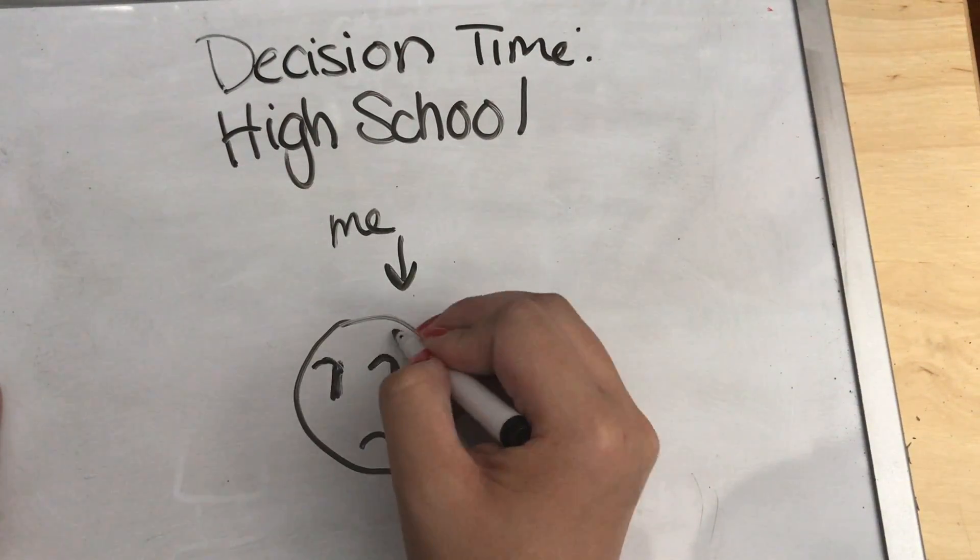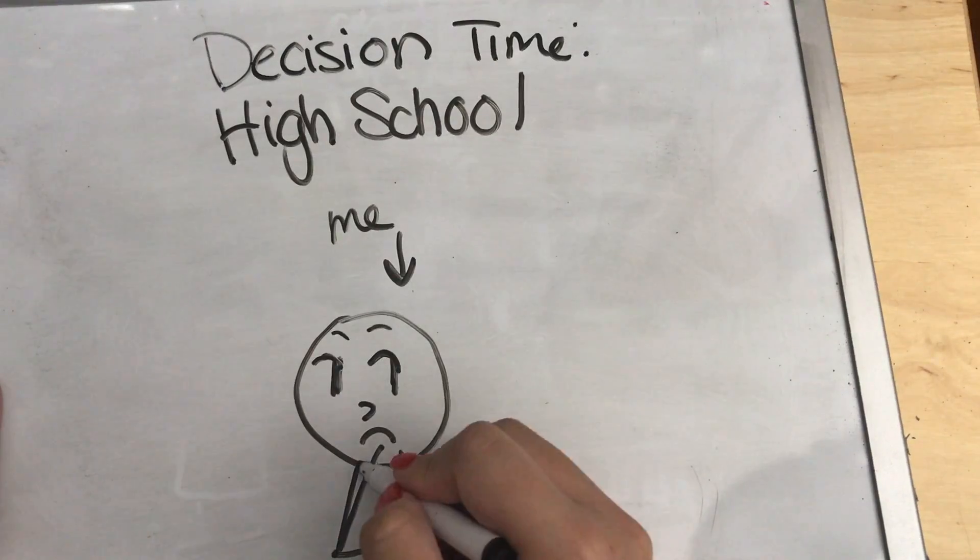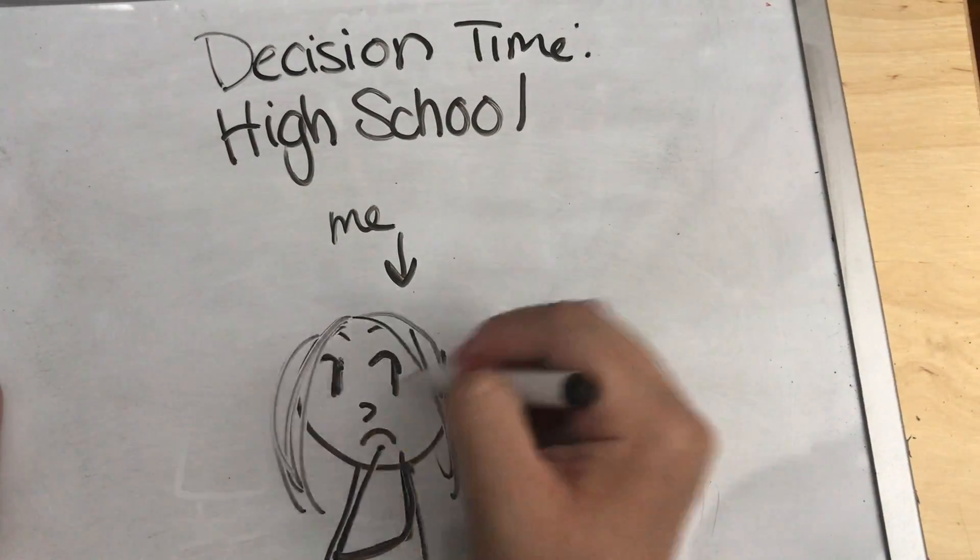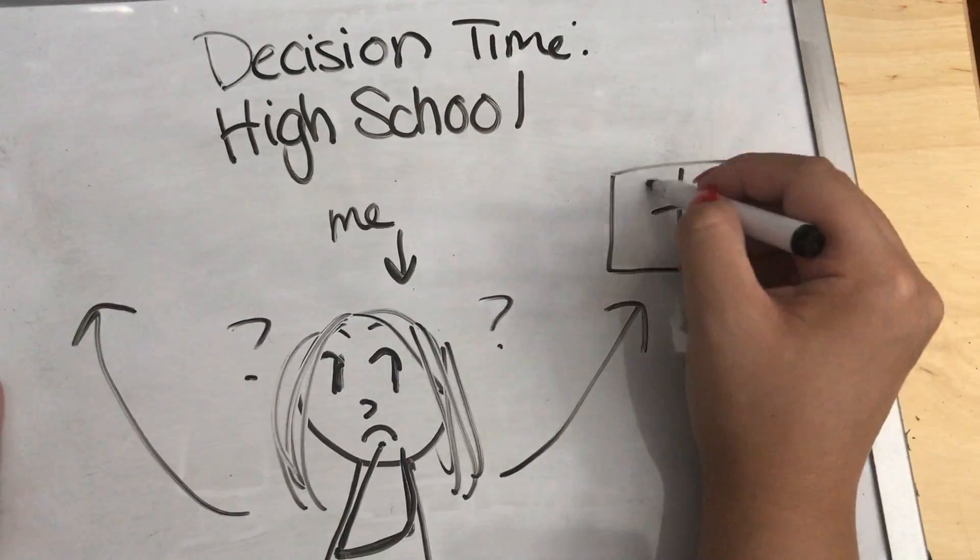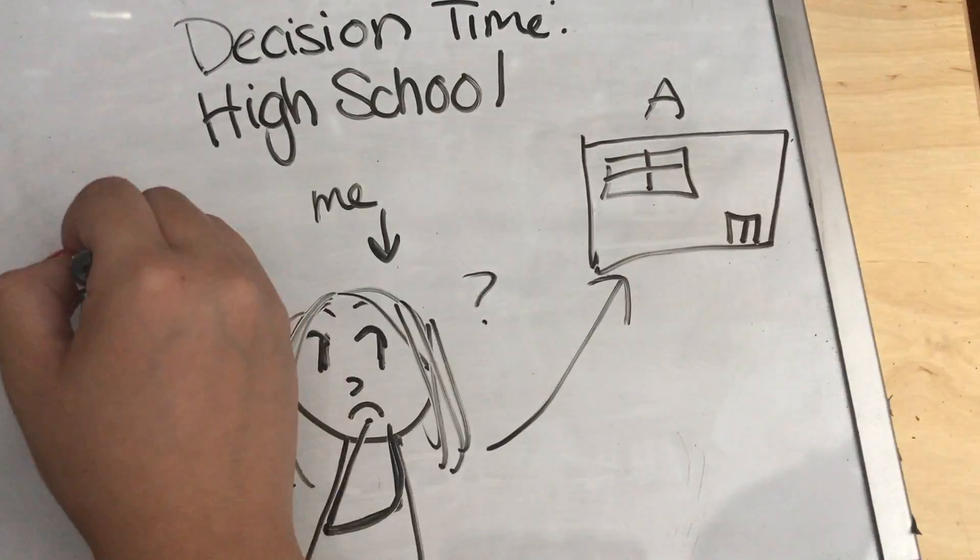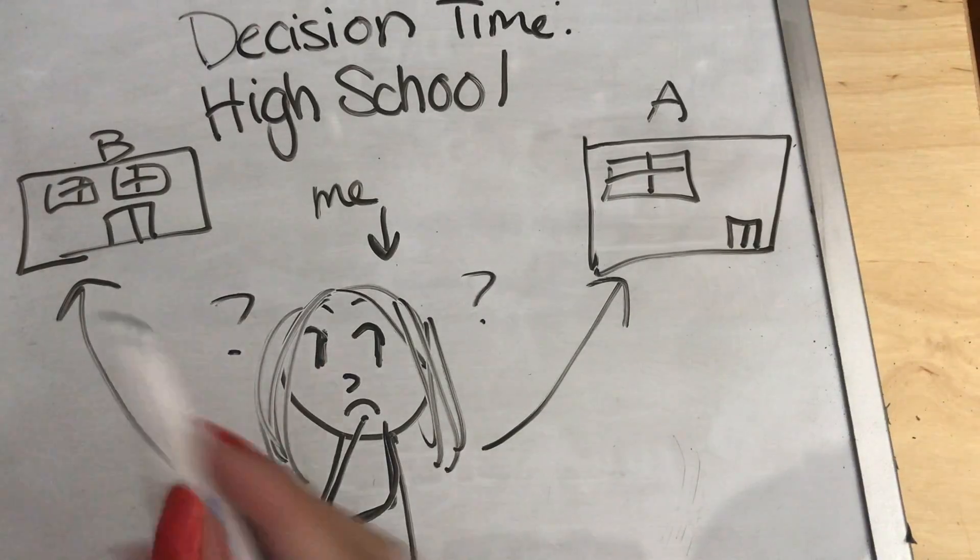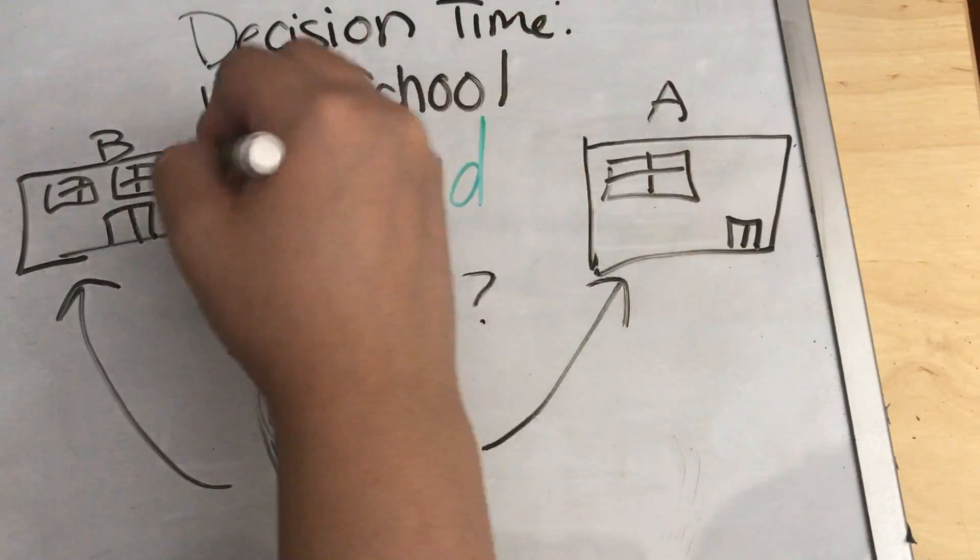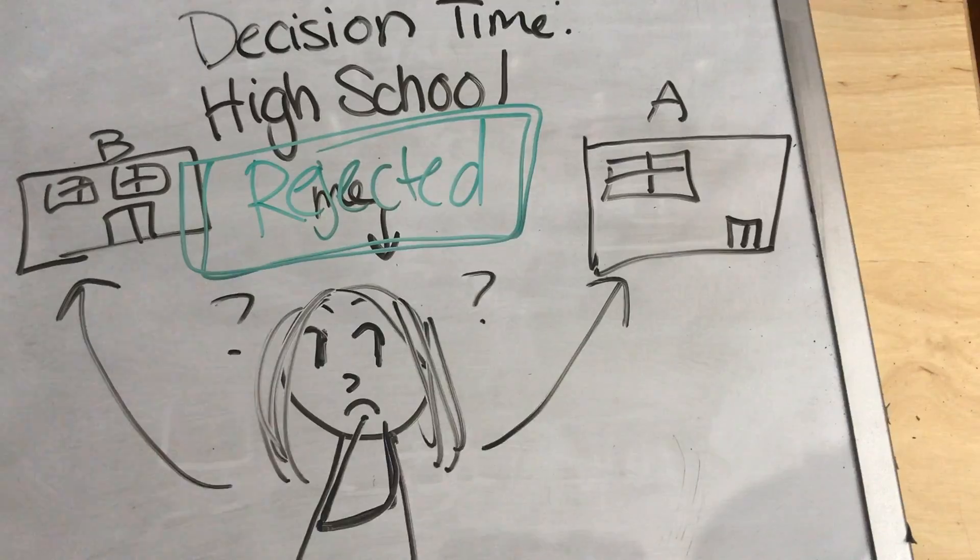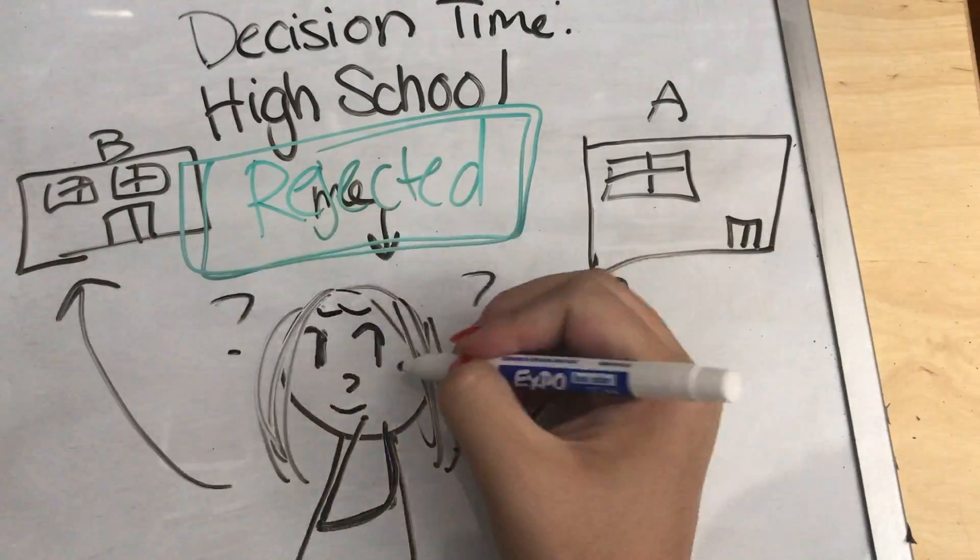I applied to two really prestigious high schools in my area and I was just so torn on what was gonna happen in my future. I just needed to know if I would even be accepted and well, long story short, your girl got rejected to both. I'm not good at math apparently enough.